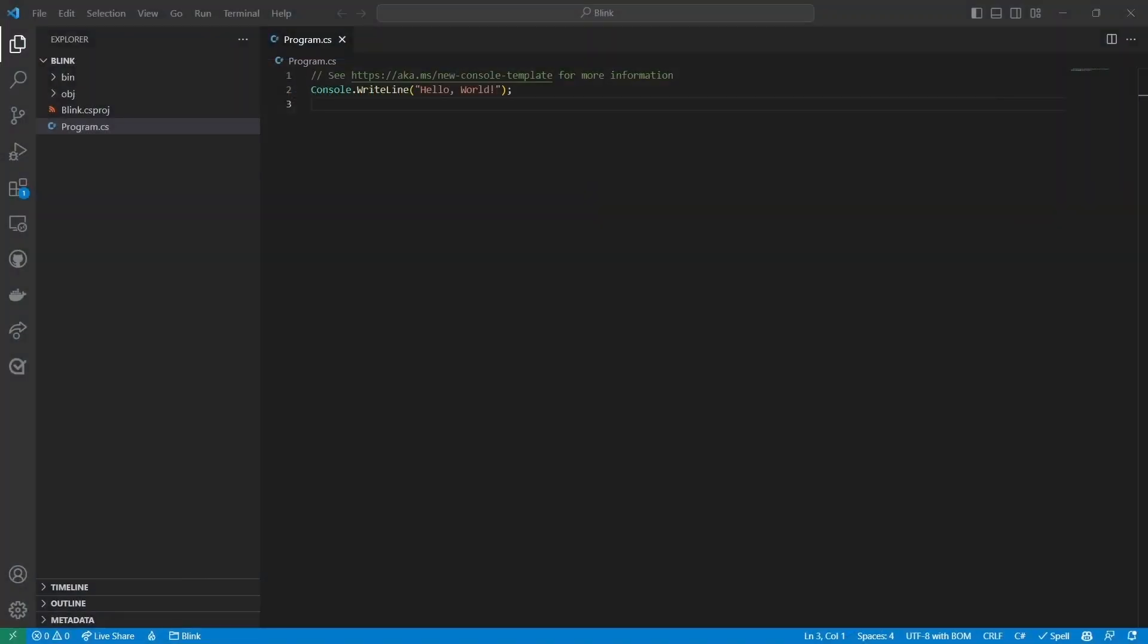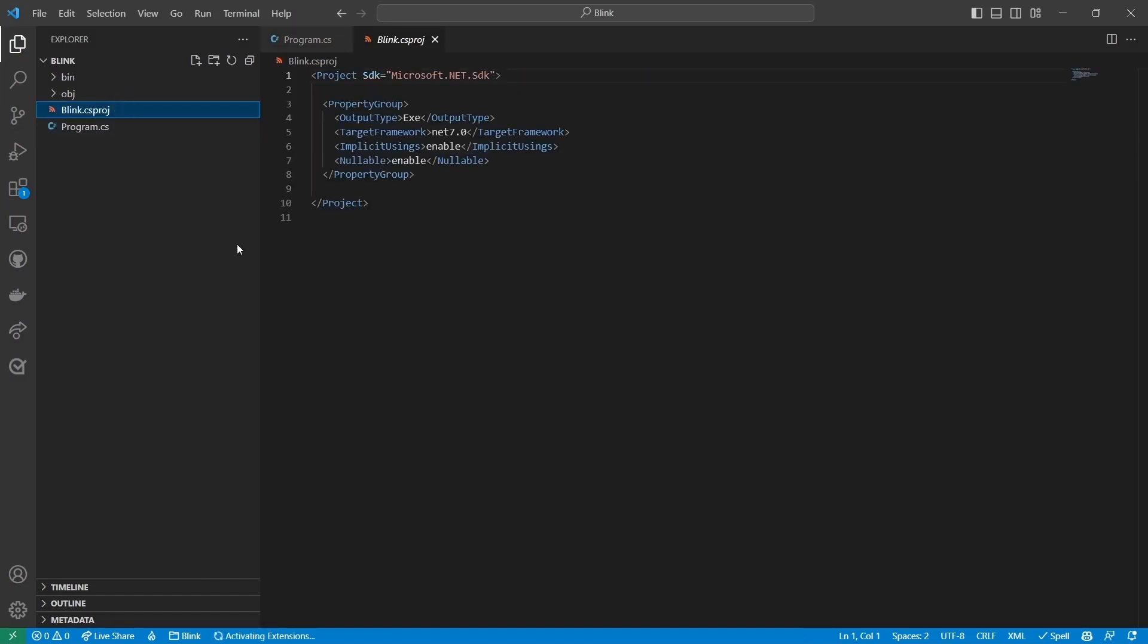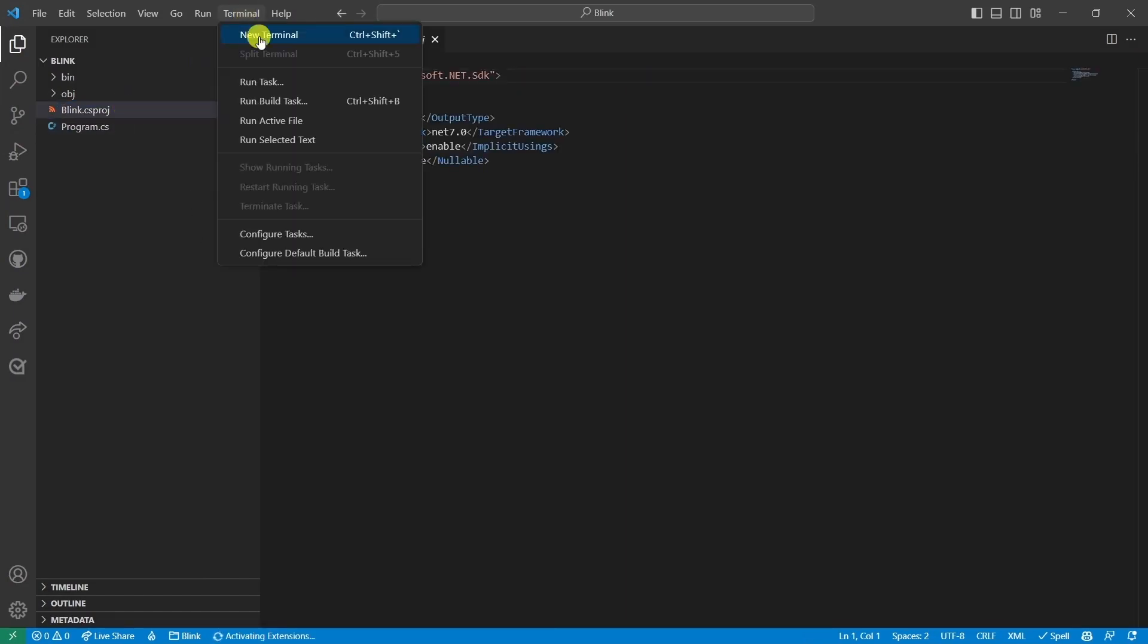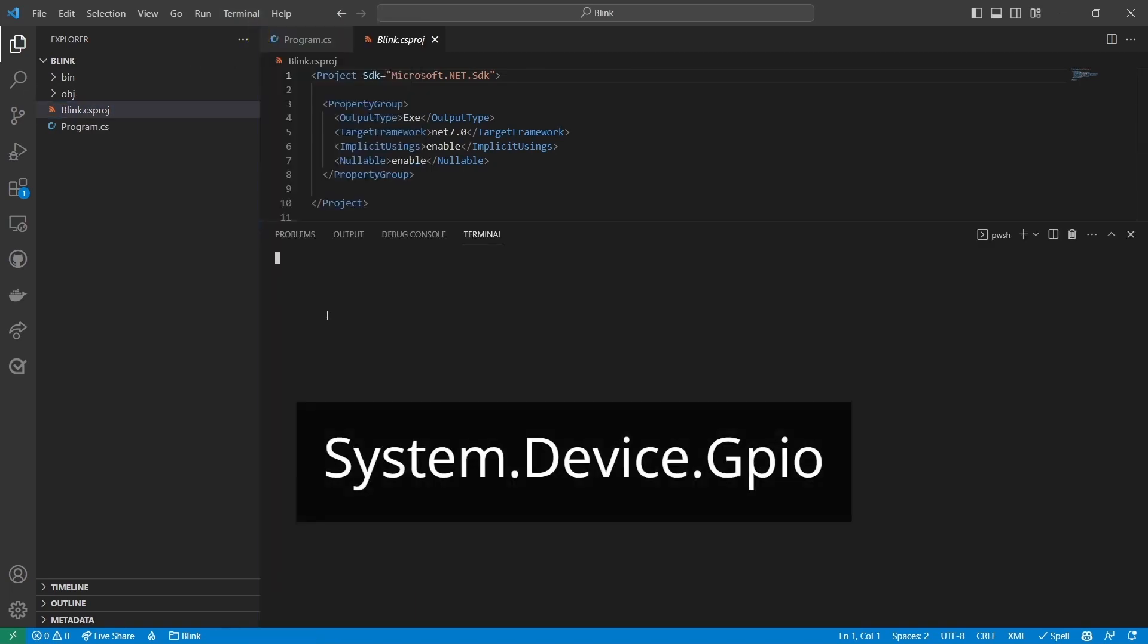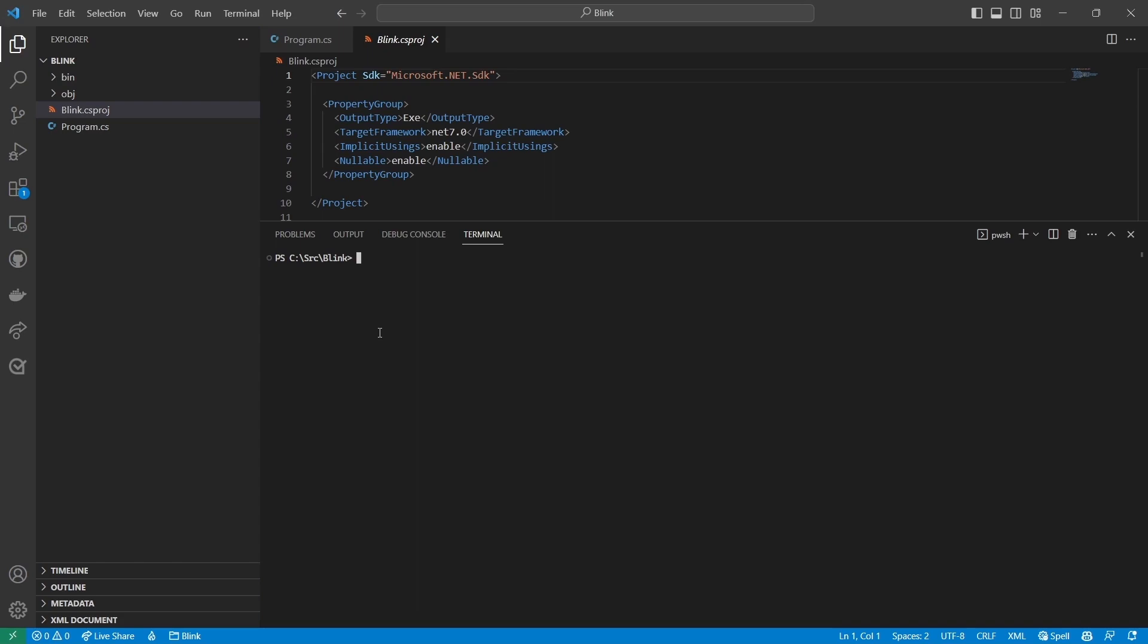Here's the empty console app in Visual Studio Code. Looking at the project file, there are no NuGet packages installed yet. In order to interact with the GPIO header, we'll need the system.device.gpio NuGet package. I'll open a terminal and I'll use the .NET add package command to install it.